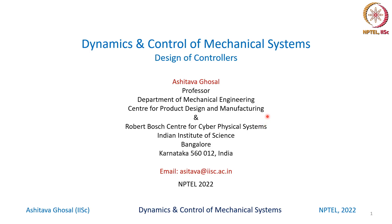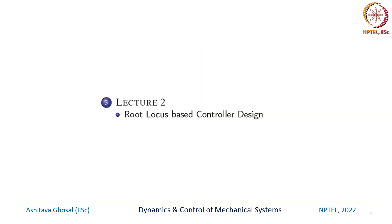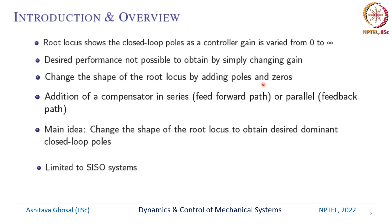In this week we will look at root locus based controller design. In root locus based controller design we will look at how the root locus can be changed or modified to achieve the desired performance. To recapitulate, a root locus shows the closed-loop poles of a system as a controller gain is varied from zero to infinity. The desired performance is often not possible by simply changing the gain, and we need to change the shape of the root locus by adding poles and zeros.